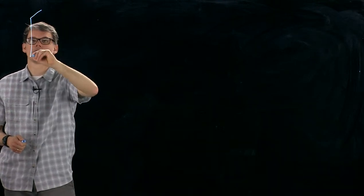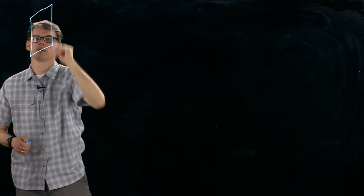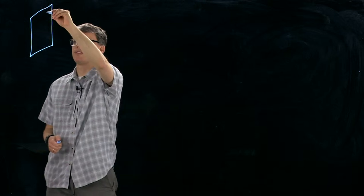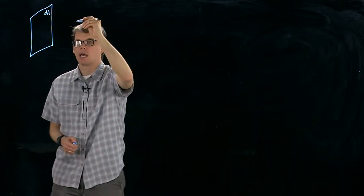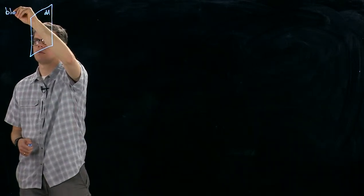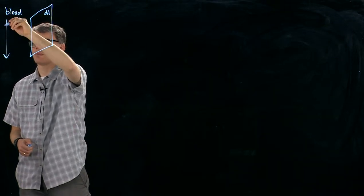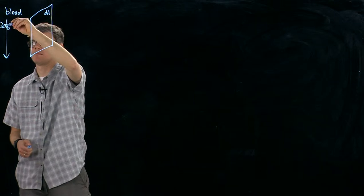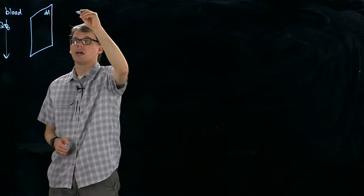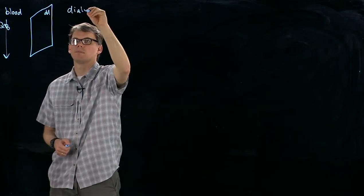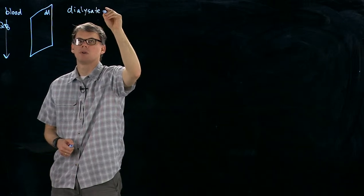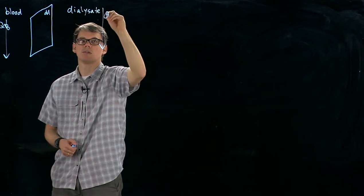So to start, let's consider a small area of that filter membrane, and we'll label it dA. And on one side, blood is flowing with a rate QB. On the other side, dialysate is flowing with a rate QD.